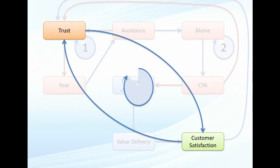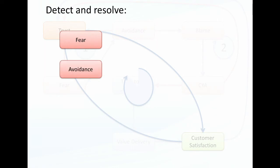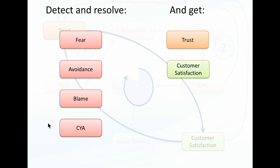To wrap this up: you want to detect and resolve whether your organization has issues with fear, avoidance, blame, or SIA behaviors. When you know they are there, work to resolve them. If you're successful, you will get more trust and more customer satisfaction. Create an environment of trust — get rid of fear, avoidance, blaming, and SIA — and you will be more successful as an organization.